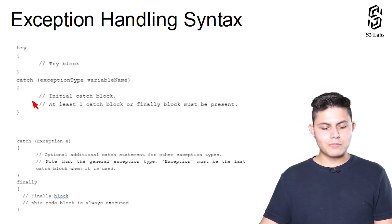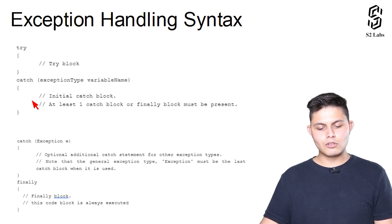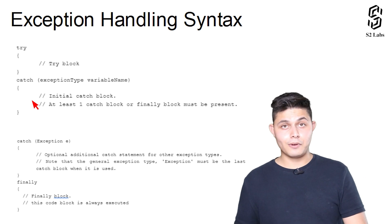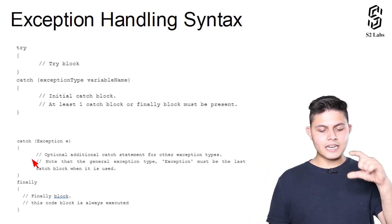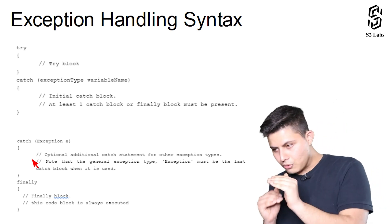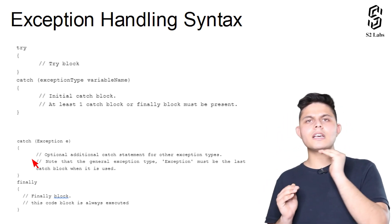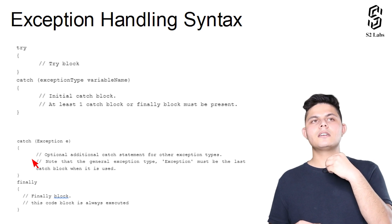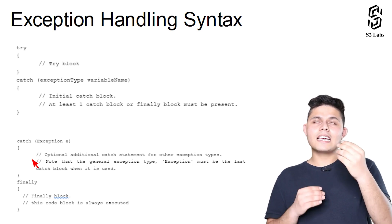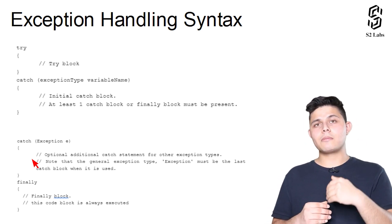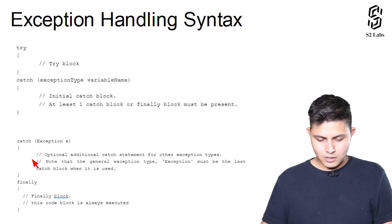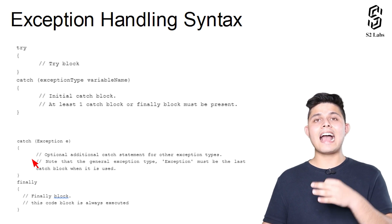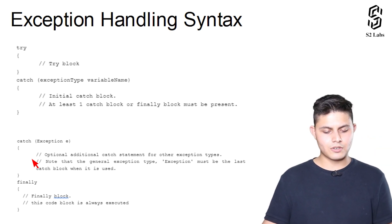The exception type in the catch block should be exactly the same type that might be thrown from the try block. Inside this catch block you need to write down the code which you want to execute in case there is an exception that occurred inside the try block. This is the code that will handle the exception.